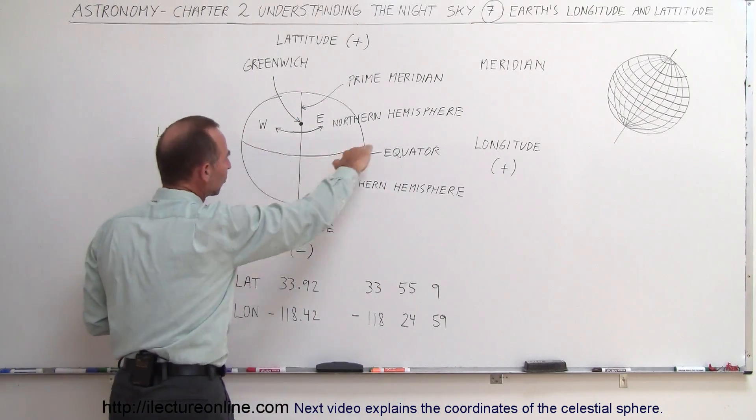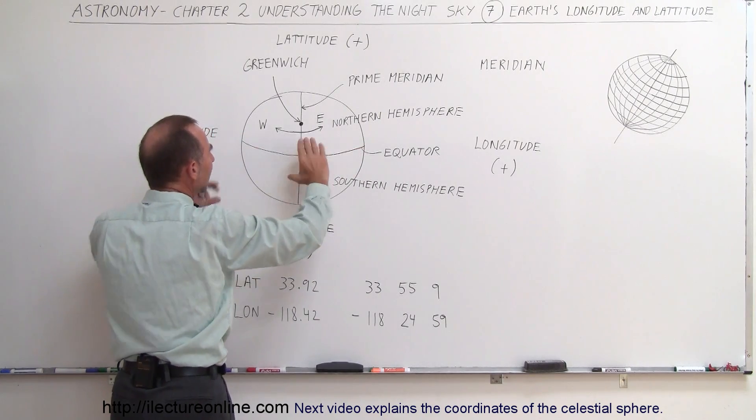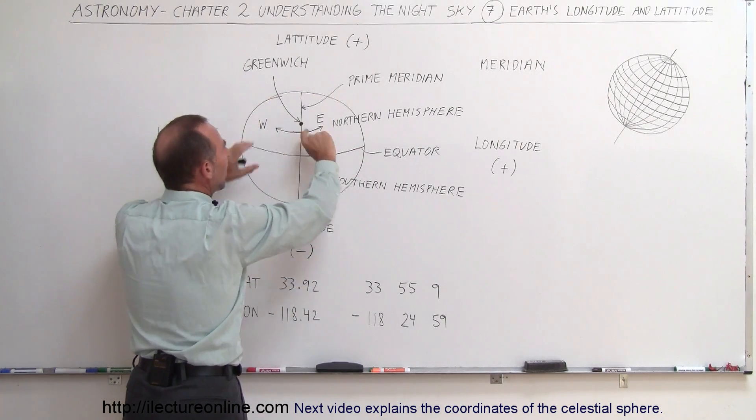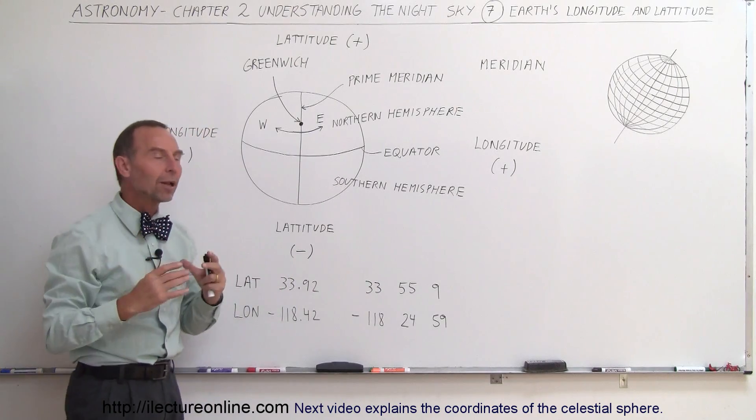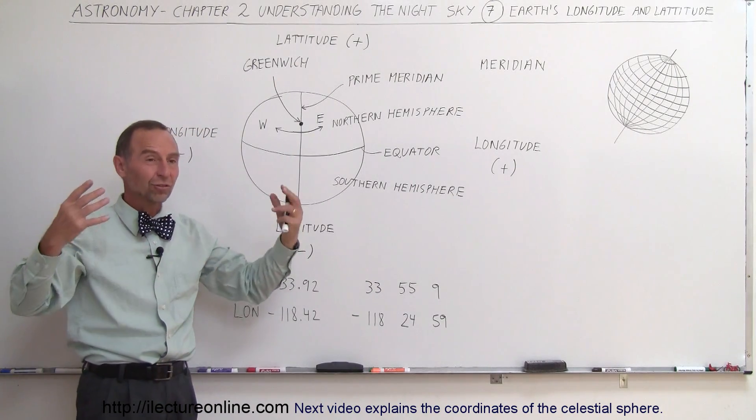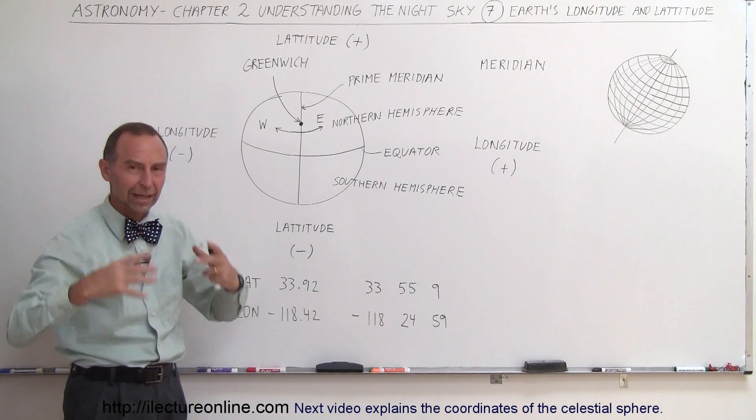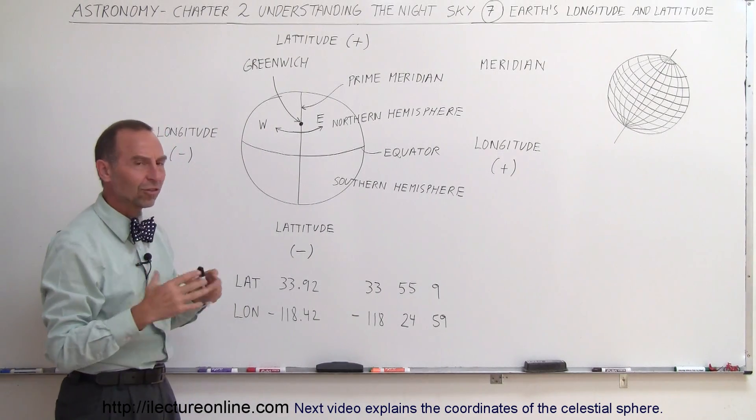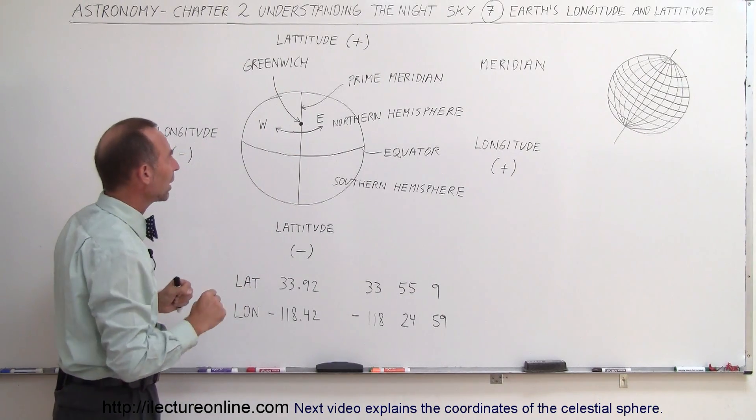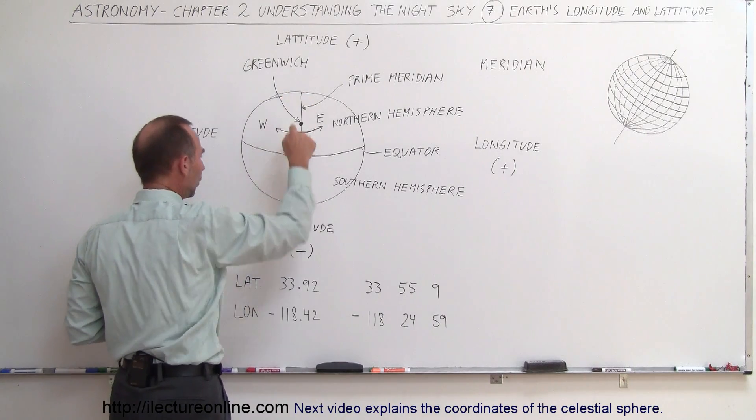We have the equator, which divides the world in a top half and a bottom half. The top half is called the northern hemisphere, the bottom half is called the southern hemisphere. In the celestial sphere, we have a northern celestial sphere and the southern celestial sphere just the same in alignment with the Earth's equator.